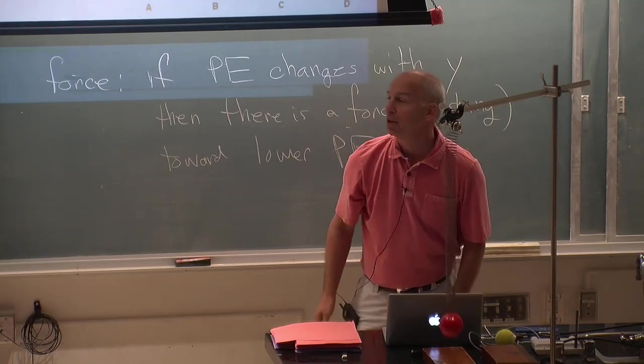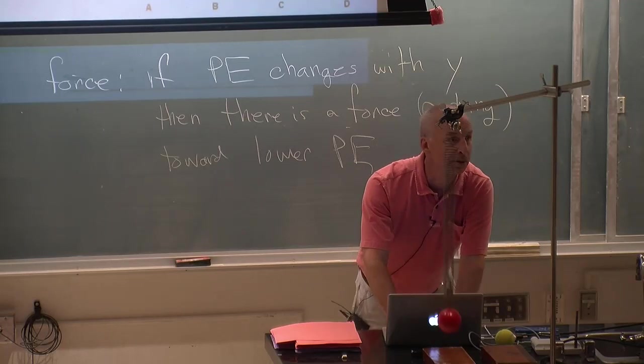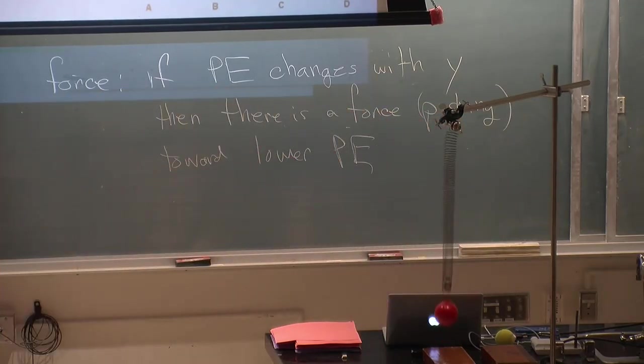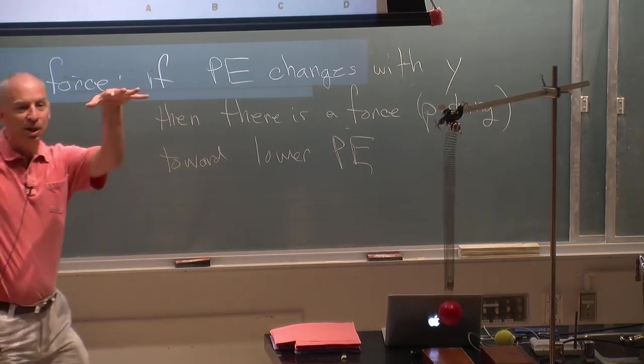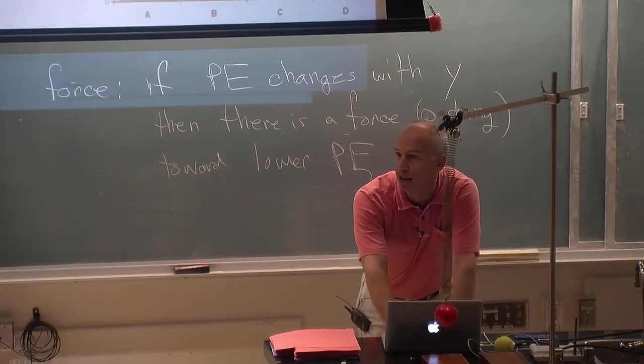So we're going to go either B or C will work. B and C are both fine answers. B is the one that I've literally drawn here. C is okay because you get to shift zero around any way you want to. So C is equivalent to B essentially.